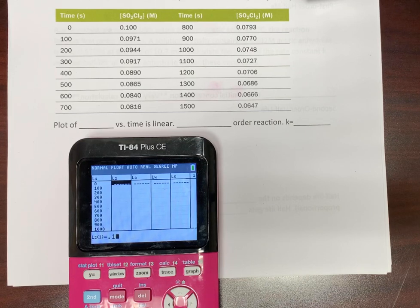So now we're going to put in our concentrations directly. So 0.1, 0.0971, 0.0944, 0.0917, 0.0890, 0.0865, 0.0840, 0.0816.